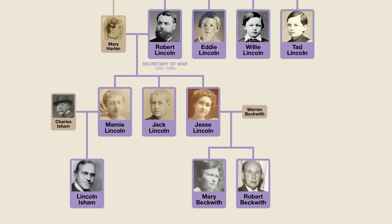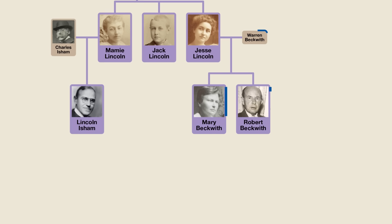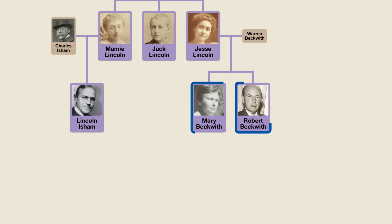So, Abraham Lincoln had only two grandchildren that reached adulthood, both females. Mammy married Charles Isham and together they had only one son, Lincoln Isham, who in turn had no children of his own, although he did marry and have several stepchildren. Jesse married a baseball player named Warren Beckwith and together they had two children, Mary and Robert. Mary, a lesbian, never married and did not have any children. She died in 1975, making her brother Robert the last living descendant of Abraham Lincoln. Robert married three times but had no children of his own, just stepchildren. Therefore, upon his death in 1985, the bloodline of Abraham Lincoln officially died out.